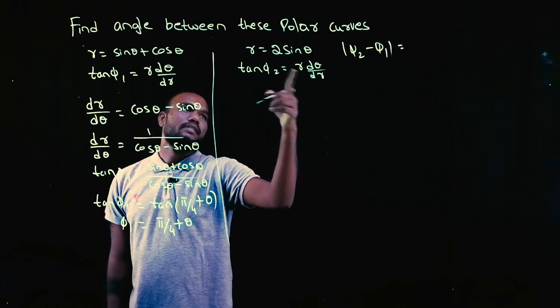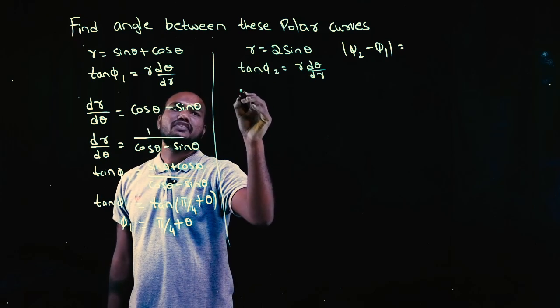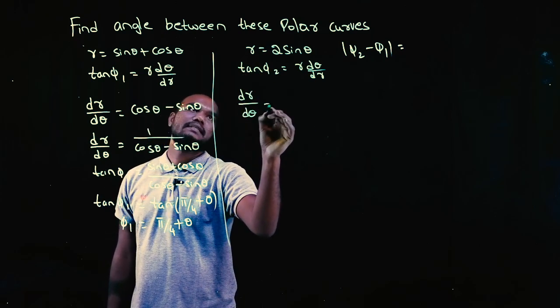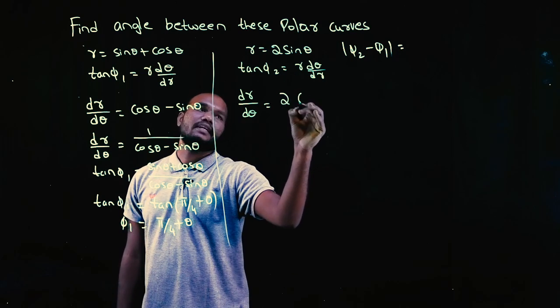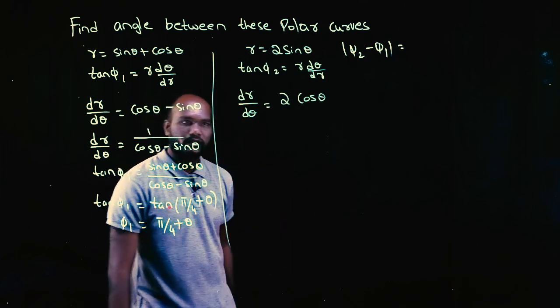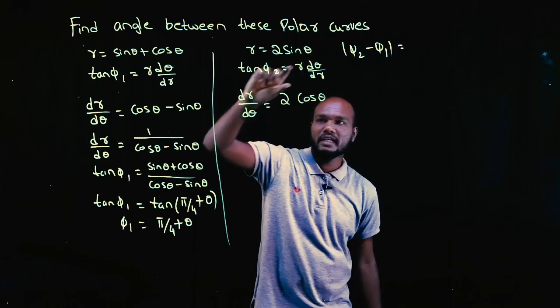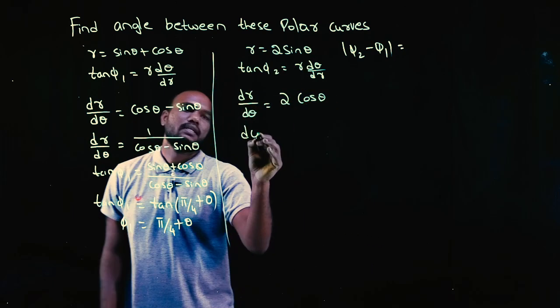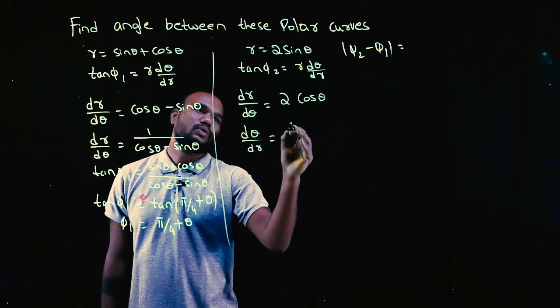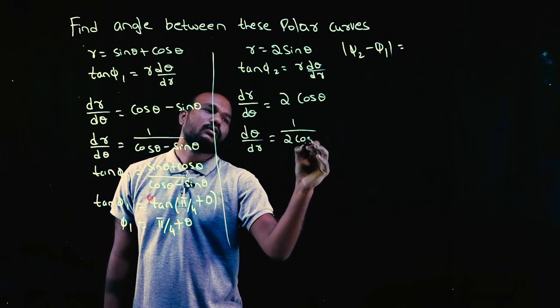So r is directly given. Let's find d theta by dr. Let's differentiate. dr by d theta is equal to 2 times sine theta. Differentiation is cos theta. I'm not interested in dr by d theta, I'm interested in d theta by dr. So just reverse it. d theta by dr is equal to 1 upon 2 cos theta.